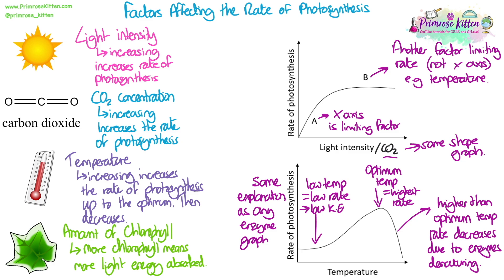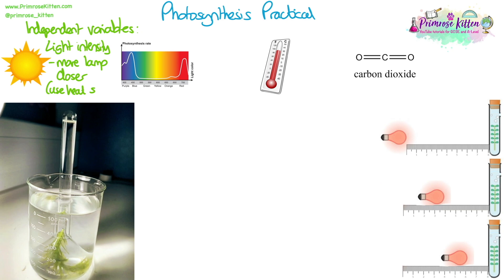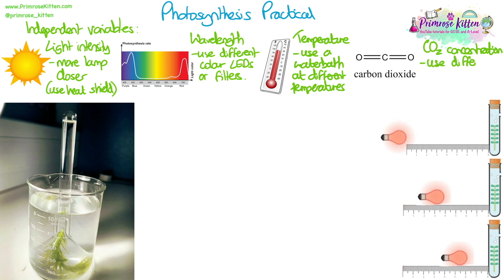These factors could be changed in a lab when doing the photosynthesis practical, or you could need to interpret how these factors might affect plants growing outside. We can change the light intensity by moving a lamp closer or further away from our plant. We should use a heat shield to make sure that only light intensity is being measured, not temperature. Different colours of light can affect the rate of photosynthesis, as more red and blue light are absorbed and green light is reflected by chloroplasts. So we can use different colour LED bulbs or coloured filters. We could use a water bath at different temperatures, or change the carbon dioxide concentration using different masses of sodium hydrogen carbonate dissolved in the water the plant is in.